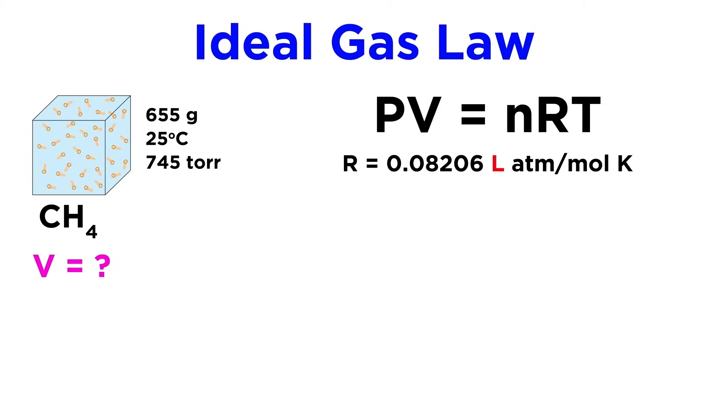That means that if we want to get a value for volume in liters, our units for pressure and temperature must be atmospheres and kelvin to cancel out the ones in the gas constant, and we must convert our mass of methane into moles. Let's perform these conversions now.